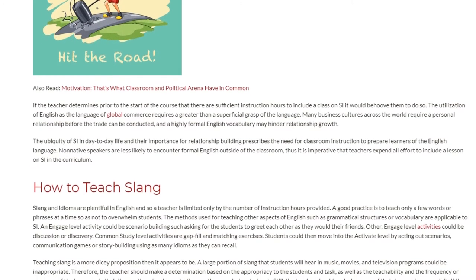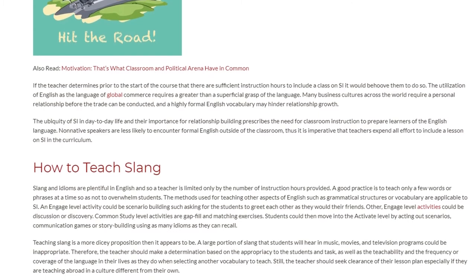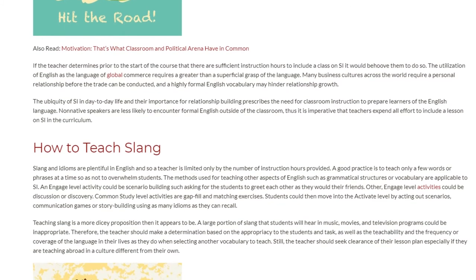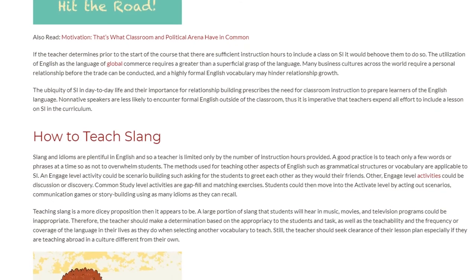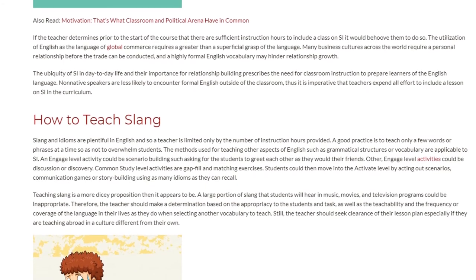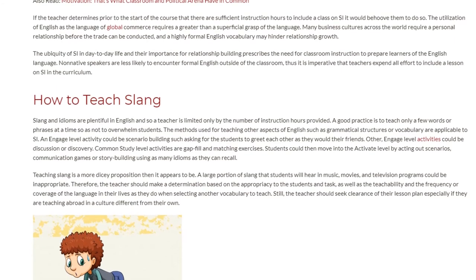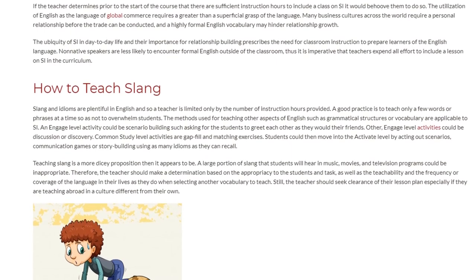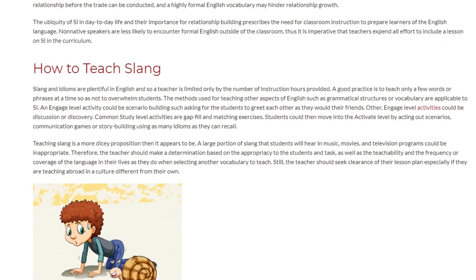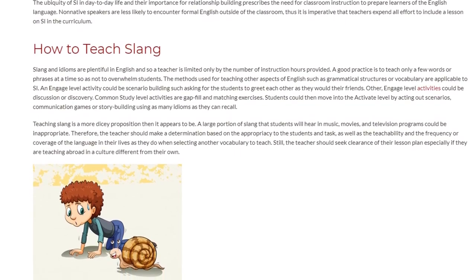Slang and idioms are plentiful in English, so a teacher is limited only by the number of instruction hours provided. A good practice is to teach only a few words or phrases at a time so as not to overwhelm students. The methods used for teaching other aspects of English, such as grammatical structures or vocabulary, are applicable to slang and idioms. An engaged-level activity could be scenario building, such as asking students to greet each other as they would their friends. Other engaged-level activities could include discussion or discovery. Common study-level activities are gap fill and matching exercises. Students could then move into the activate level by acting out scenarios, communication games, or story building using as many idioms as they can recall.